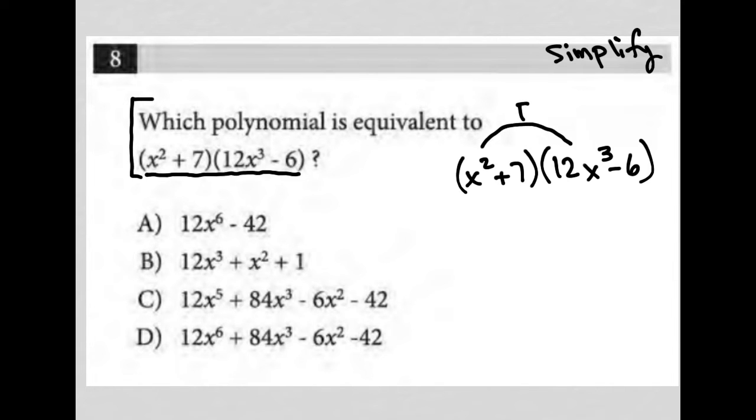So my first step here is to multiply the two first things. And what I get by doing that is 12x to the fifth power. And when I scan my answer choices, I only see one answer that has a 12x to the fifth power. So I'm pretty sure the answer is C, but let's just keep going.